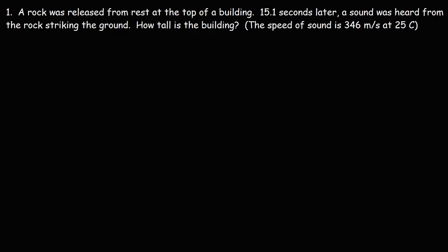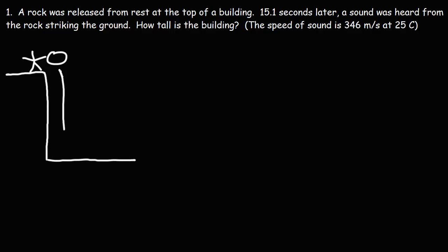A rock was released from rest at the top of a building. 15.1 seconds later, a sound was heard from the rock striking the ground. How tall is the building? So let's say this is the building and this is the ground floor. A person releases a rock from the top — he doesn't throw it down, he simply releases it from rest. The rock falls under gravity, strikes the ground, and emits a sound that spreads in all directions. That sound wave travels back and the person hears it 15.1 seconds after he drops the rock. So with this information, how can we determine the height of the building?